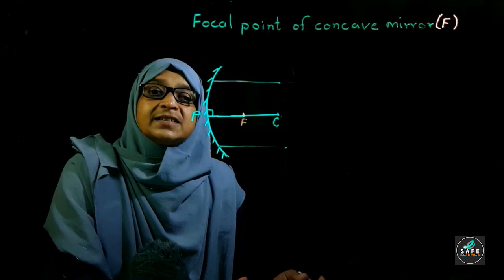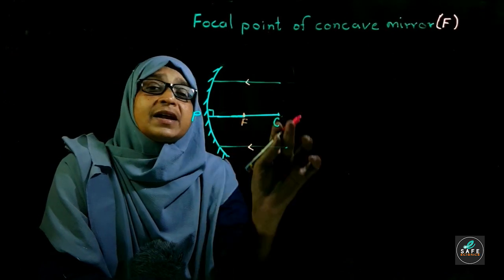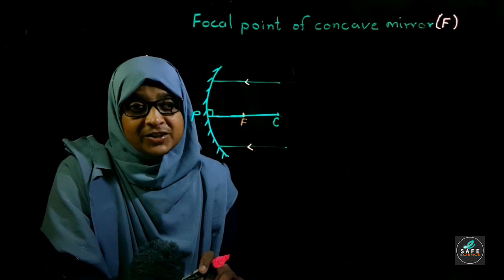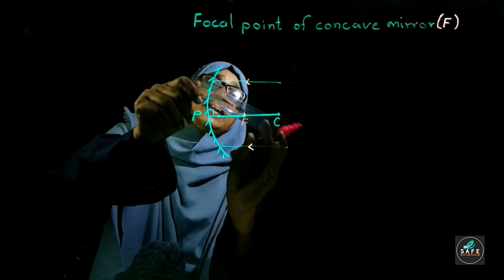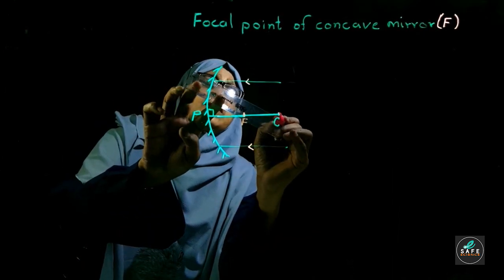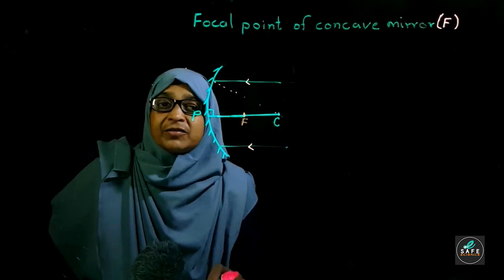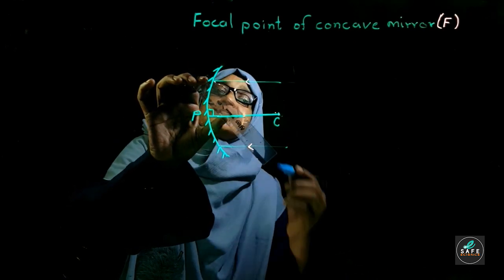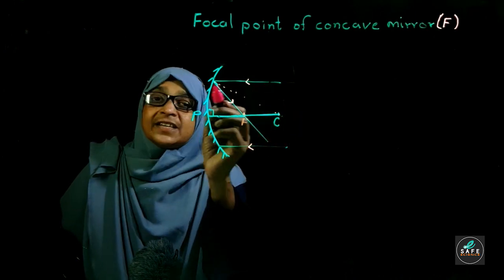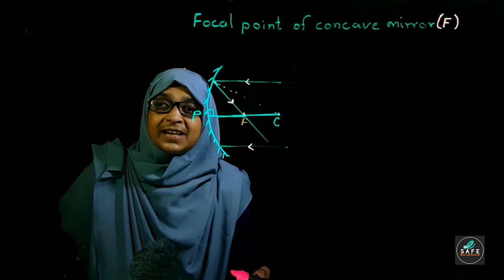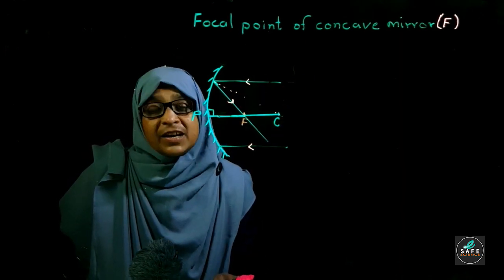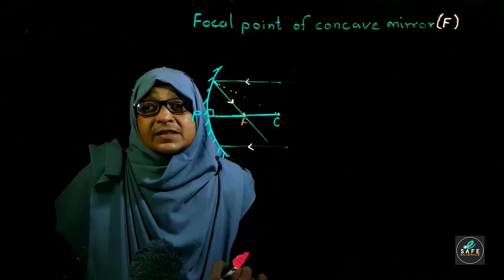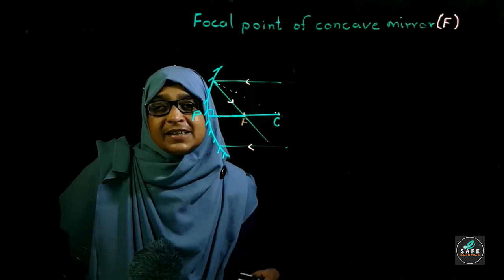These are incident rays parallel to the principal axis. They reflect according to the law of reflection. At each incident point there is a normal, and light reflects according to the law through the focal point. We can see all these light rays reflecting according to the law of reflection, and due to the curved shape, each parallel ray passes through the focal point.